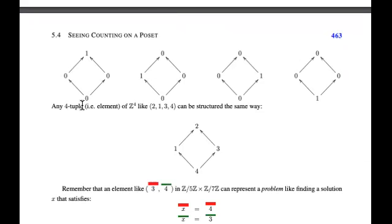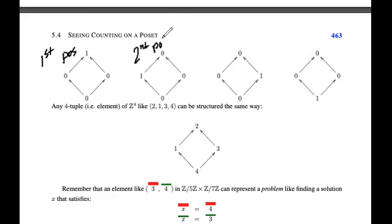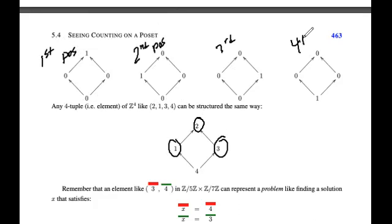You can take any 4-tuple in Z⁴ — that's the Cartesian product of Z four times, making tuples of four things. So like (2, 1, 3, 4). Let's let this first vertex be the first position, the second be the second position. So 2 is in the first position, 1 is in the second position, 3 is in the third position, and 4 is in the fourth position. We can express where we are by where we place it in the tuple.